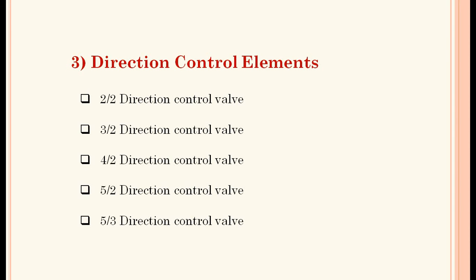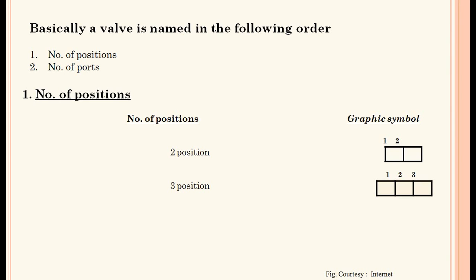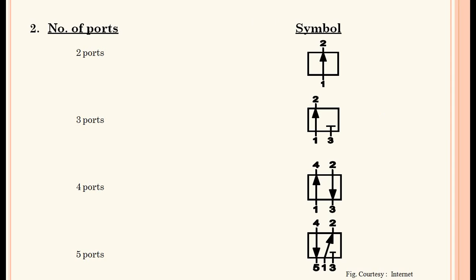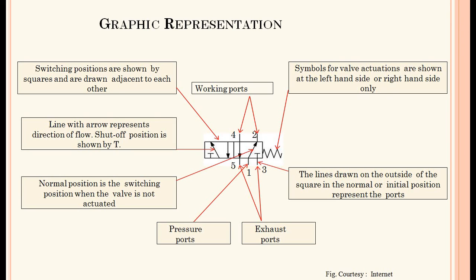Direction control elements — the third group — include 2/2, 3/2, 4/2, 5/2, and 5/3 direction control valves. A valve is named in the following order: number of positions and number of ports. Two or three positions are possible. Number of ports: two ports, three ports, four ports, and five ports. How the direction control valve is represented — with exhaust ports, pressure ports, working ports, and the switching lines — is shown in this slide.